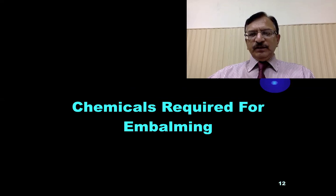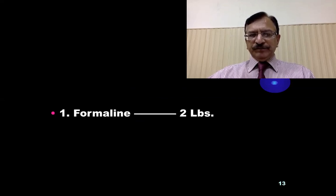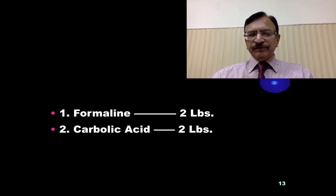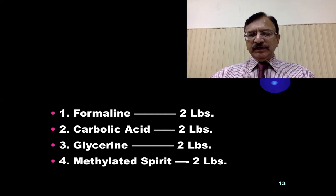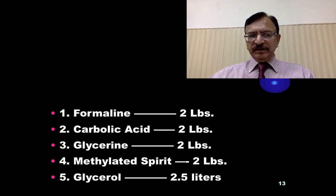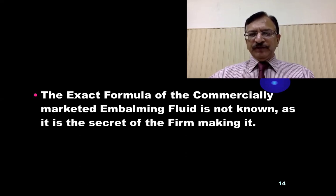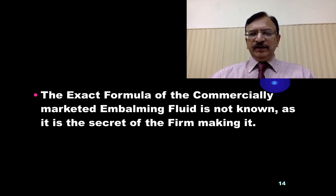The chemicals required for embalming: usually formalin about two pounds, carbolic acid two pounds, glycerin two pounds, methylated spirit two pounds, and glycerol 2.5 liters. This is the routine combination of fluids used in our country, that is Pakistan. However, the exact formula of commercially marketed embalming fluid is not known, as it is a trade secret and they do not disclose it.